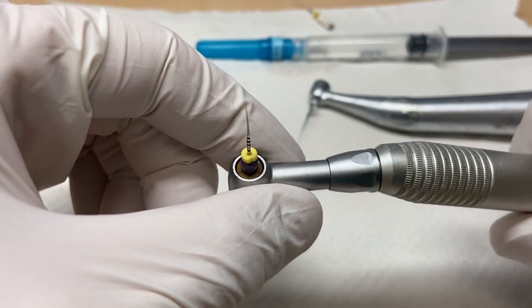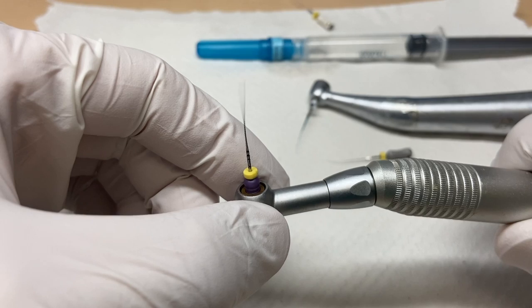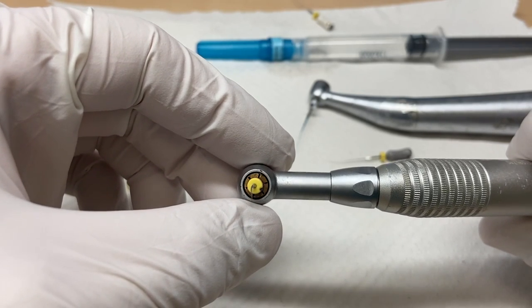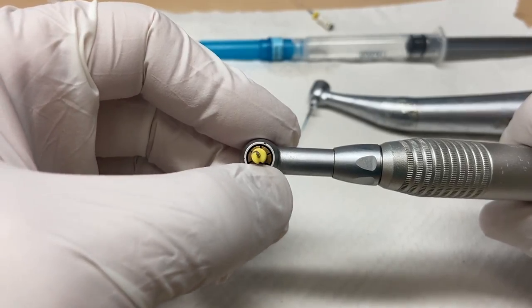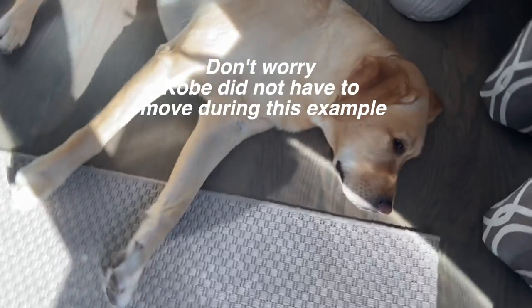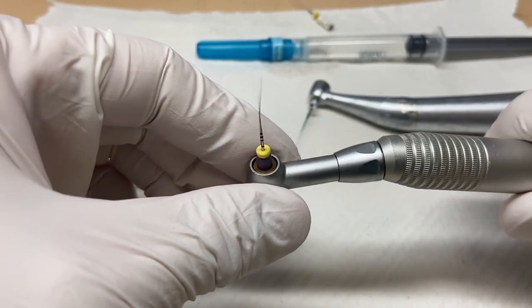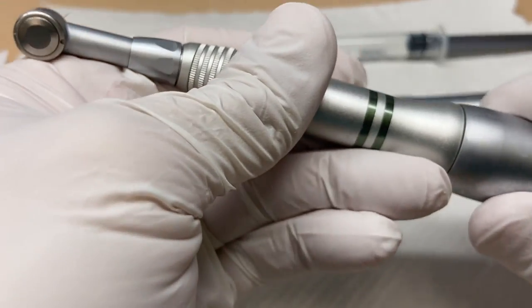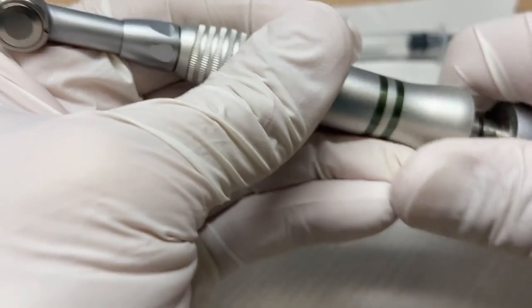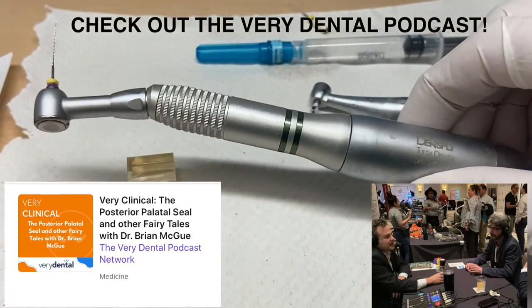What essentially it does is you take your hand file, you place it down to length. And then this, in those really tight canals, it'll just do the watch winding for you. So what it's doing is it's going 30 degrees one way, 30 degrees the other way. Counterclockwise, clockwise. And what you can do is easily fabricate your GlidePath. Now I've just got the handpiece right here. That's all it is.